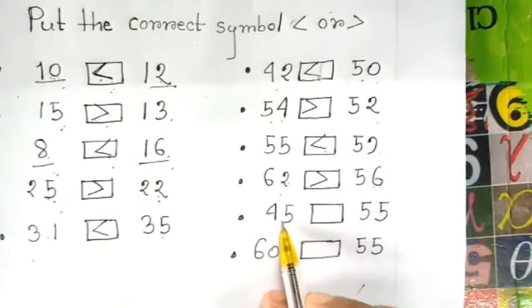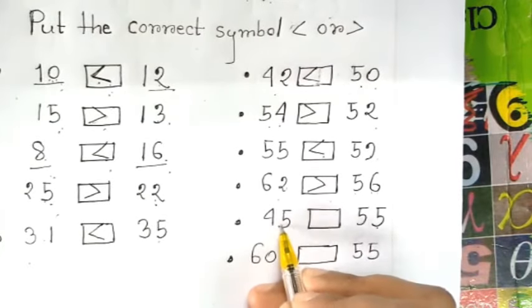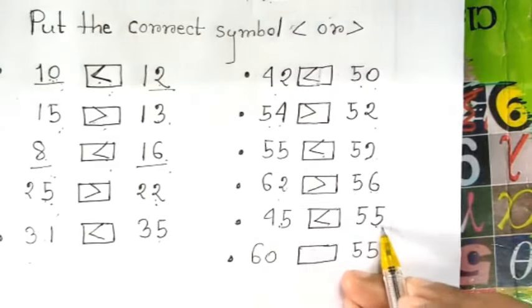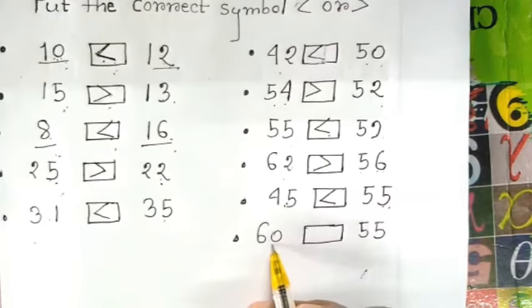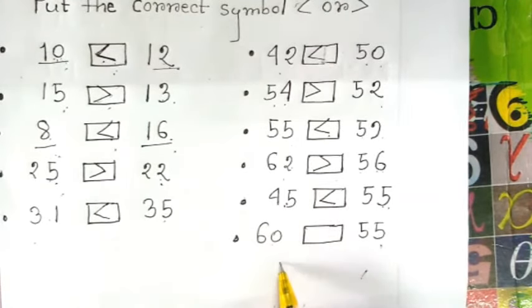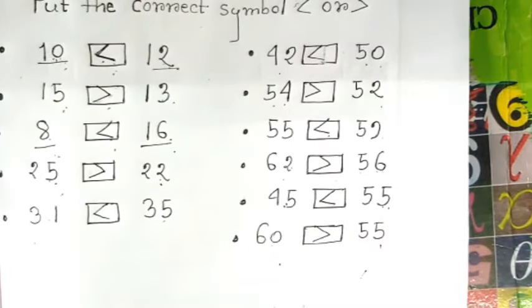45, 55. So 45 is smaller than 55. 60, 55. 60 is greater than 55.